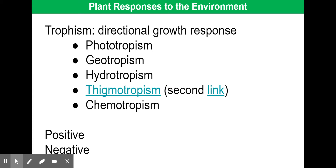A tropism is a directional growth response. For phototropism, we have a directional growth response towards or away from light — positive phototropism towards light, negative away from light. Geotropism is a growth response in response to gravity; positively geotropic means growth towards gravity, negatively geotropic means away from gravity. Similarly, hydrotropism is growing towards water, thigmotropism is the touch growth response, and chemotropism is growing towards or away from chemicals depending on whether it's positive or negative.